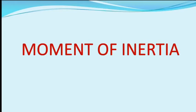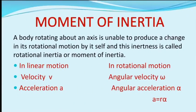Similarly, in rotational motion, a body rotating about an axis is unable to produce a change by itself, and this inertness or this inability is called rotational inertia or moment of inertia.